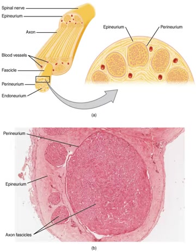Nerve growth factors are produced causing many nerve sprouts to bud. When one of the growth processes finds the regeneration tube, it begins to grow rapidly towards its original destination, guided the entire time by the regeneration tube. Nerve regeneration is very slow and can take up to several months to complete. While this process does repair some nerves, there will still be some functional deficit as the repairs are not perfect.